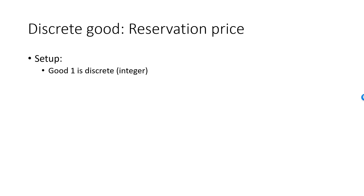In analyzing a discrete good, it's common to normalize the price of the other good — which we tend to think of as a bundle of other goods — to be equal to 1. P1 is then really the relative price of good 1 relative to the bundle. Normalizing p2 equal to 1, our budget line is p1x1 plus x2 is equal to m.